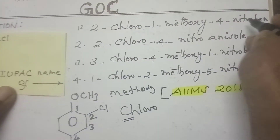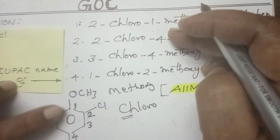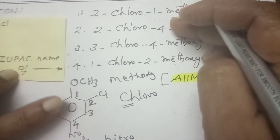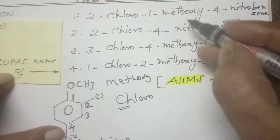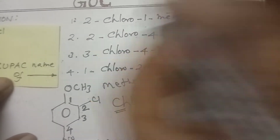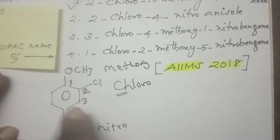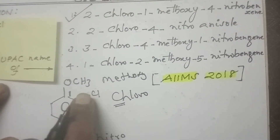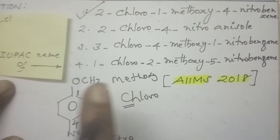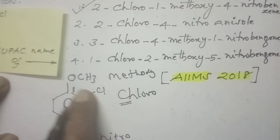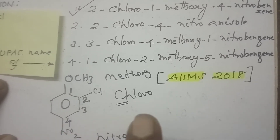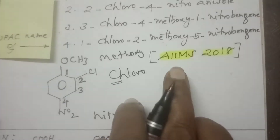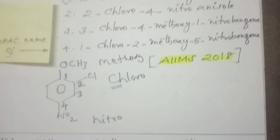With 2-chloro, these two positions are available. Let us proceed: 2-chloro, 1-methoxy, 4-nitrobenzene. So this is the answer. The rule is: all substituents — based on alphabetical order, you select the numbering and go in the same direction. This is the correct way of answering. This is an important question from AIMS 2018.